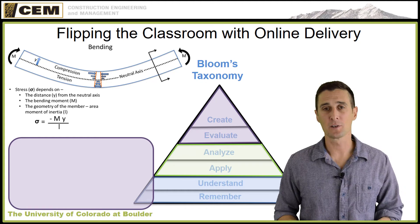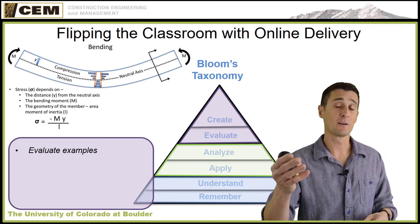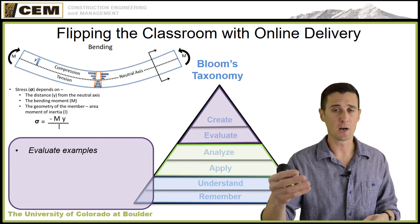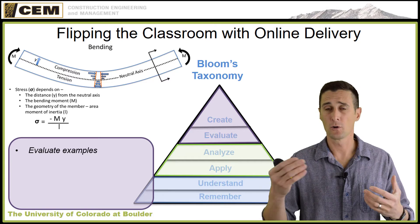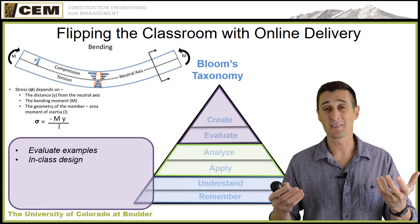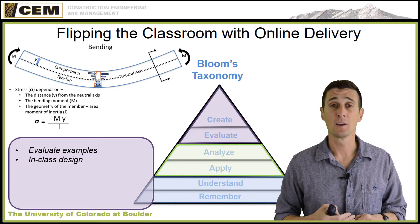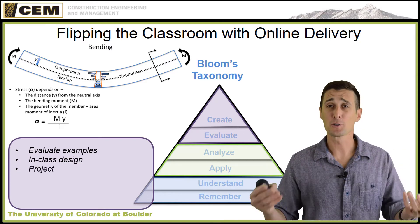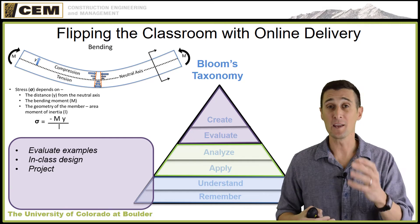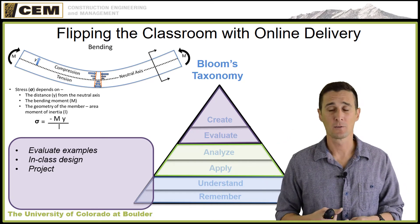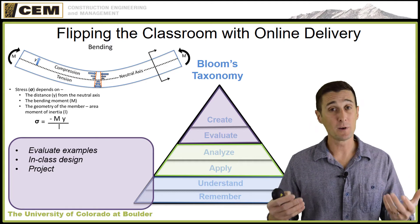The last portion of Bloom's taxonomy is to evaluate and create. We evaluate examples of beams and bending — the shape, geometry, material type, loading scenarios — and determine if a beam is going to fail or work. Then we do in-class design where, based on load scenarios and geometry, we specify different shapes of beams and material types. Projects — whether inside or outside the classroom, individual or group — bring students to the top of Bloom's taxonomy. This is the sequence I would suggest: flipping the classroom, going through Bloom's taxonomy, and doing it effectively online.